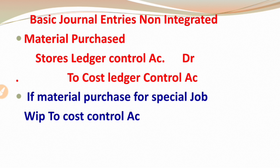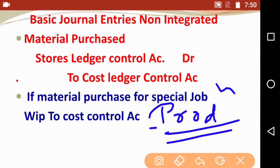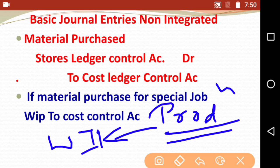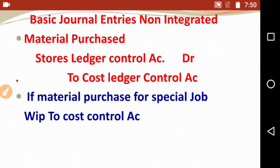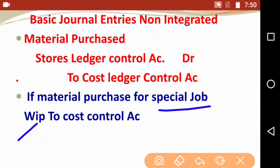If material is purchased for a special job, remember the word 'production' — wherever that word comes, you write WIP, which is work in progress. So for materials issued for a special job, the entry is: WIP control account debit to cost control account.